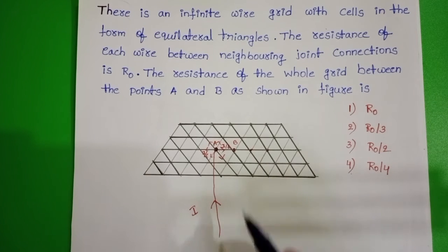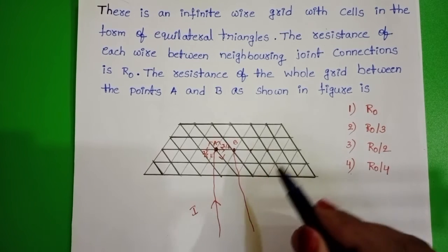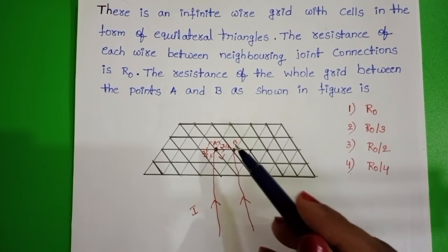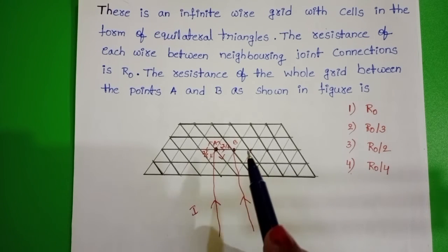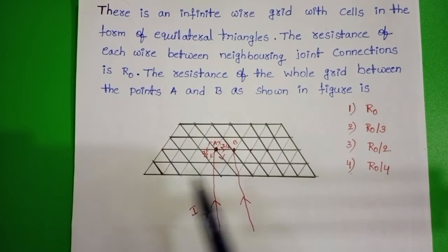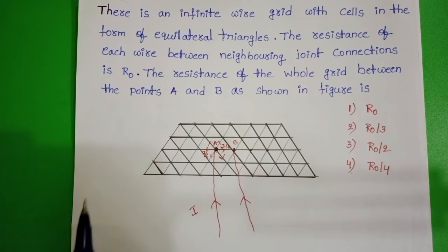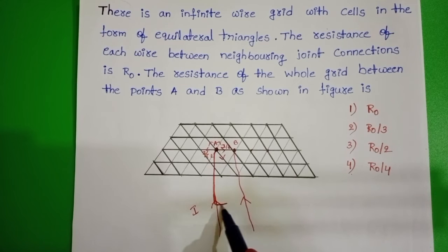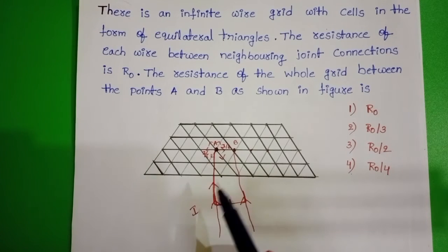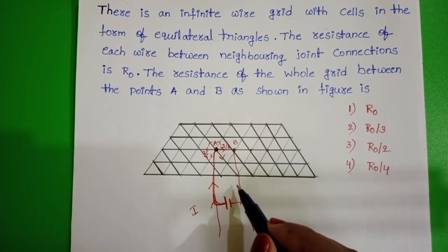In the same way, take point B. For point B also, current I enters this point. The current leaves from point B in six directions as well, and along each direction current is I/6. So now these two points are connected using a battery: current I enters into point A and leaves from point B.